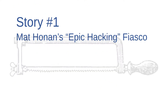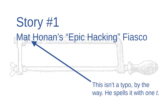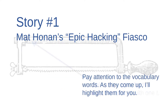The first story I'm going to tell you is true. It's about a journalist named Matt Honan who was hacked by an anonymous cybercriminal. You can read about it in more depth at Wired.com. The story there is titled, "How Apple and Amazon Security Flaws Led to My Epic Hacking." He spells Matt with one T. Pay attention to the vocabulary words — as they come up, I'll highlight them for you.